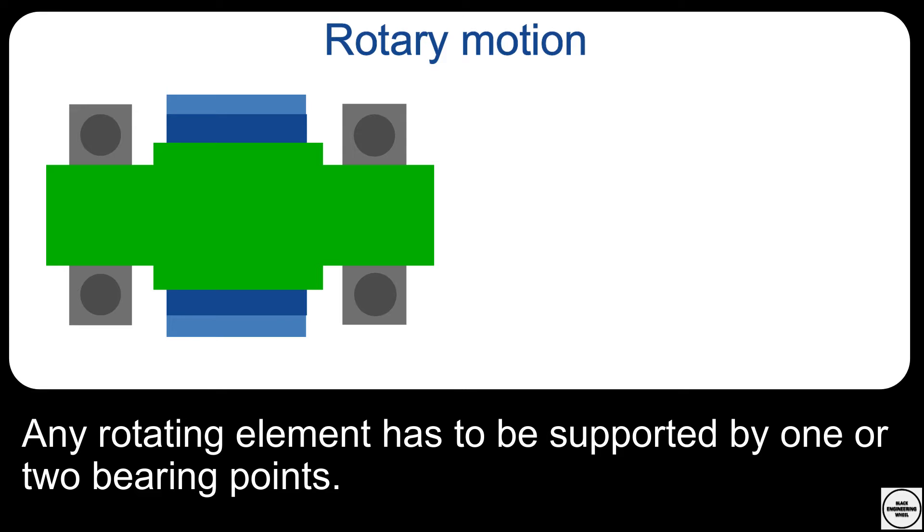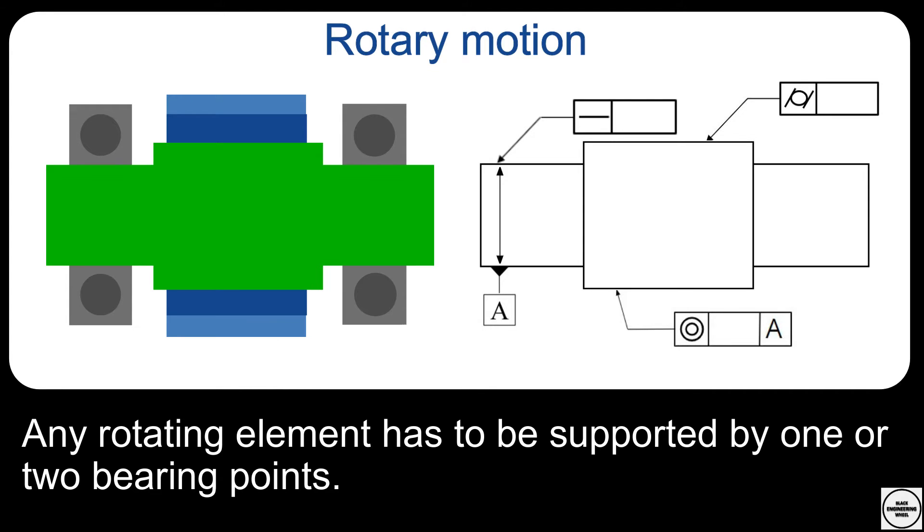If you want to use the tolerances that we know so far to control this rotating function, you will have to use straightness to control the straightness of the center line of the rotating section, also cylindricity to control the surface, and also concentricity to control the center line of the rotating section and the bearing section are concentric.